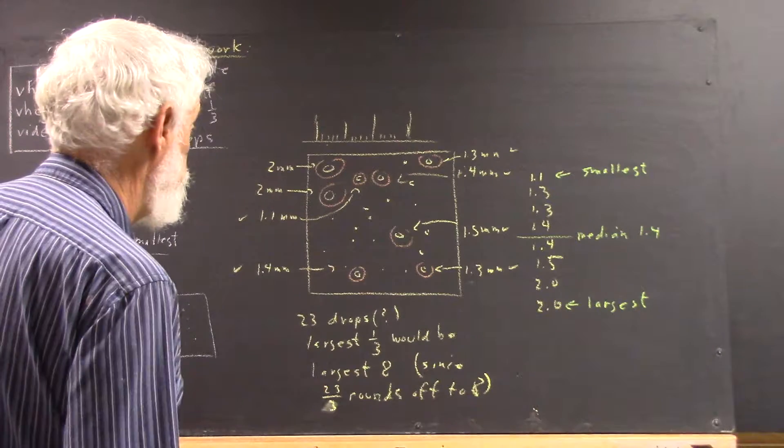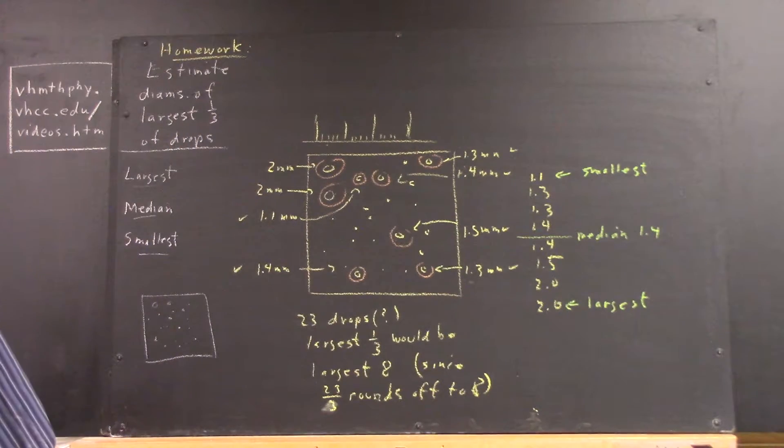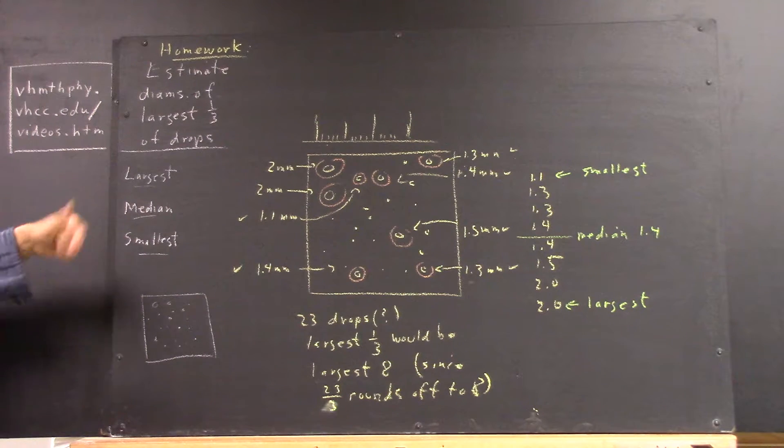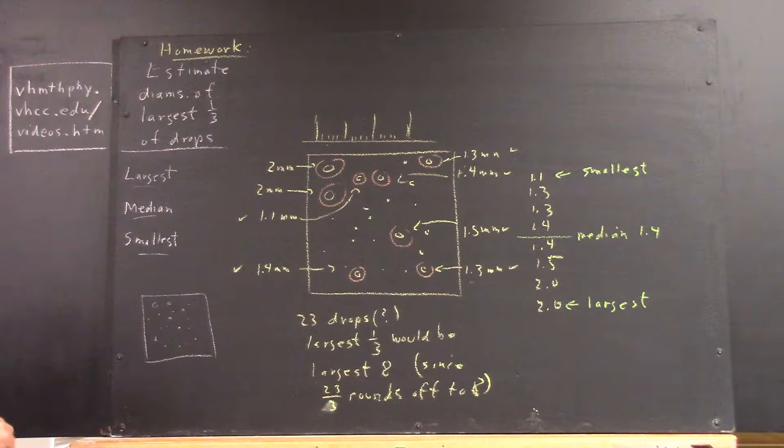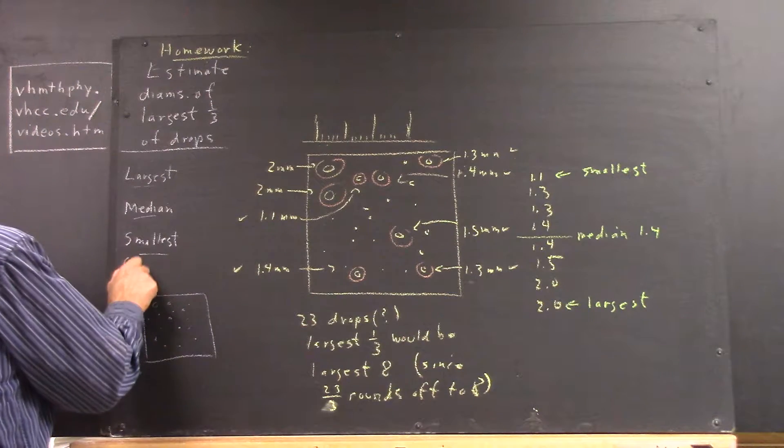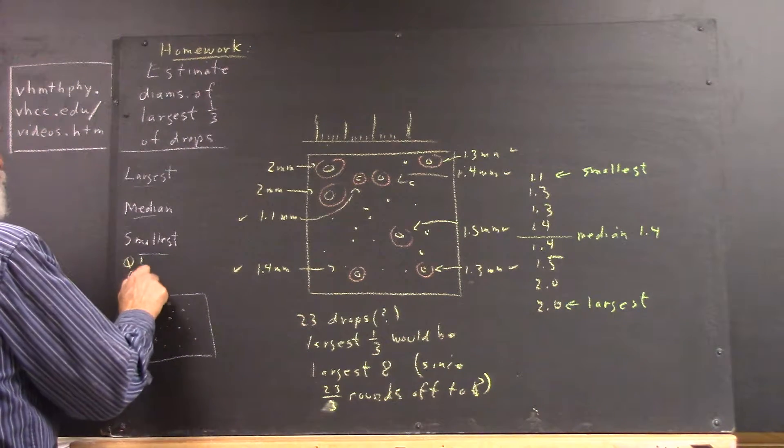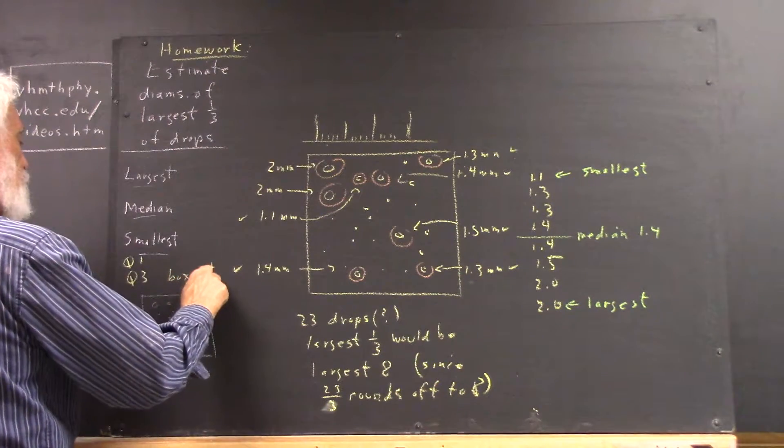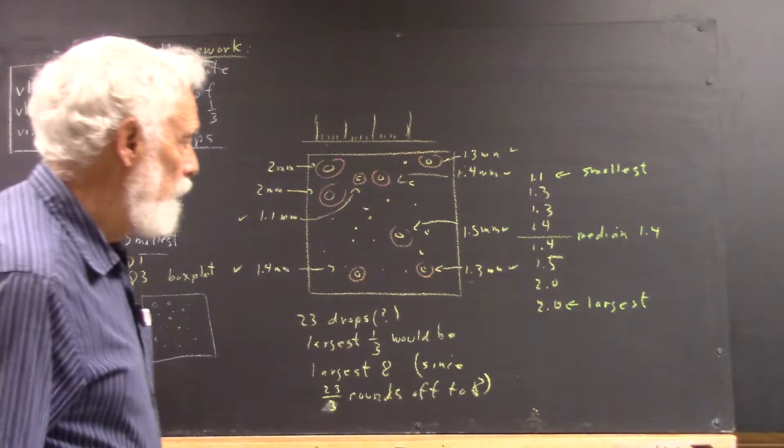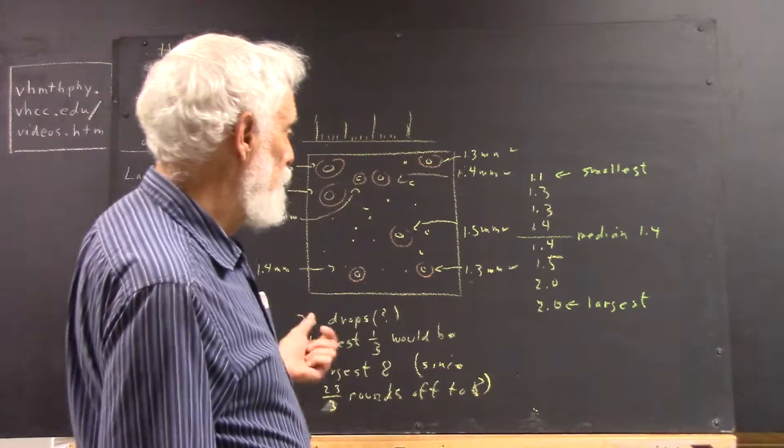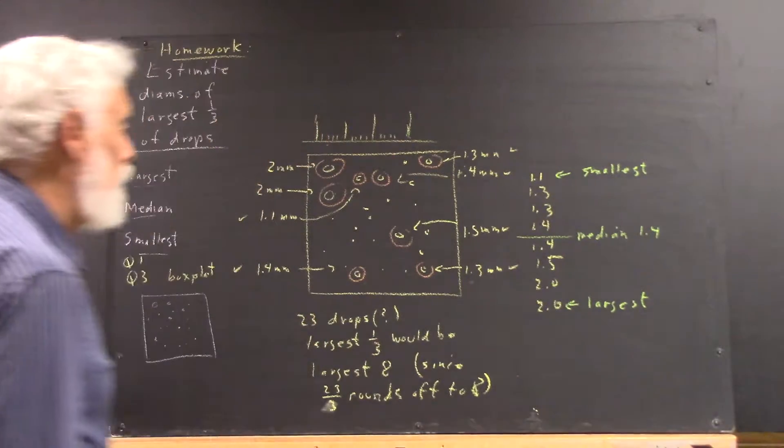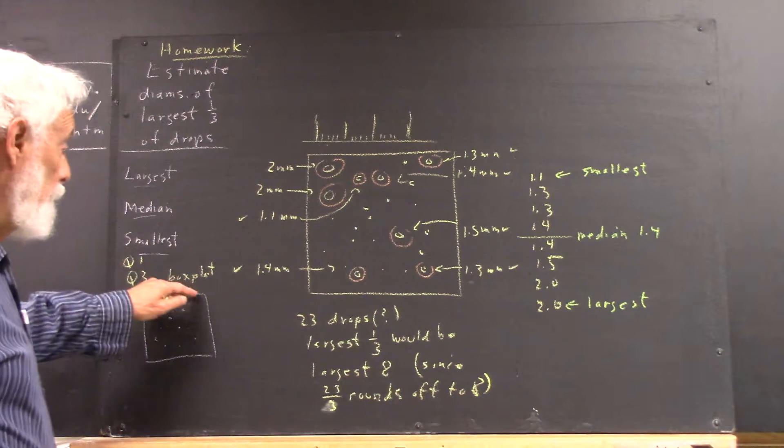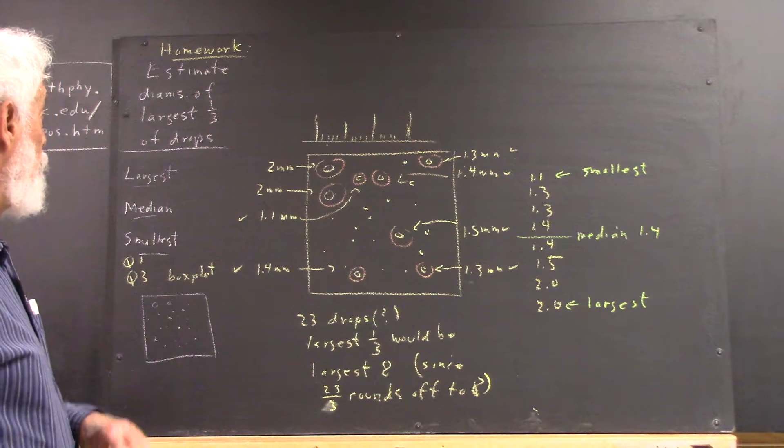And while we're at it, what I want you to do, I want you to find the largest, the median, and the smallest of the top third, and let's also add Q1, Q3, and a box plot. Okay, well, we know how to do that. We see what Q1 is. We see what Q3 is. We see what the smallest is. We see what the largest is. So we want to make a box plot. So this is one part of your assignment.